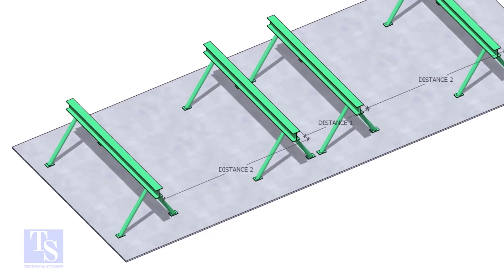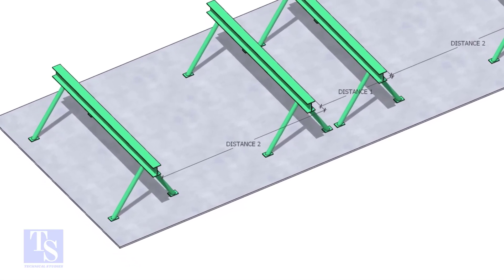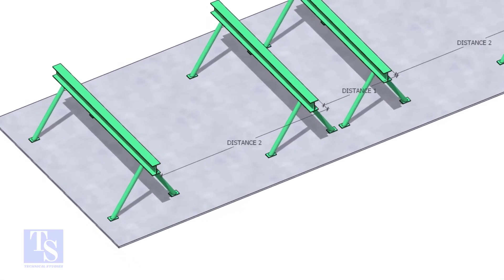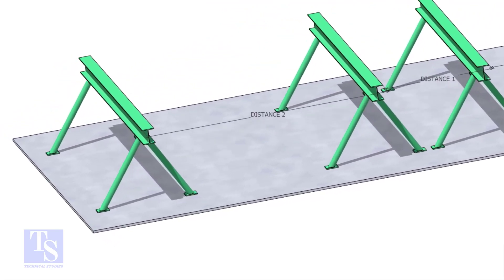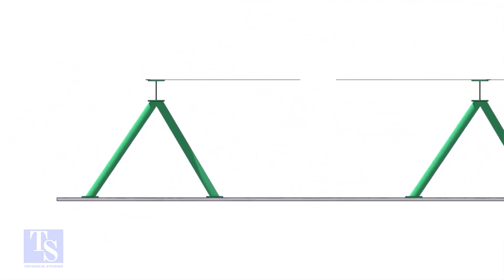Distance 1 shall be 1 meter to 1.2 meters. And distance 2 shall be 2 to 2.5 meters, less than the random pipe length.